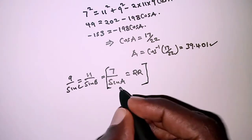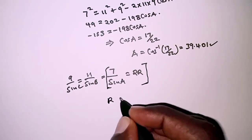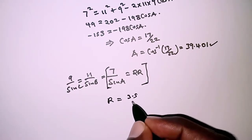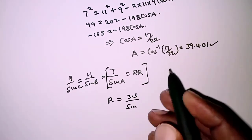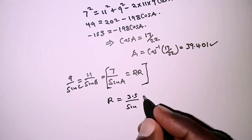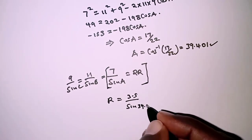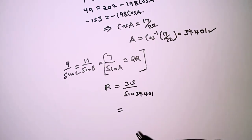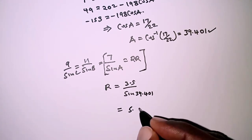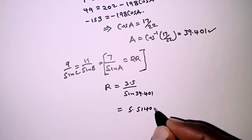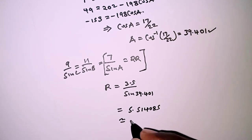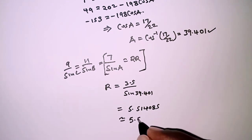Dividing both sides by 2, R equals 3.5 over sine A, where A is 39.401 degrees. Working this out on a calculator gives 5.514085, and rounding to two decimal places the radius R is 5.51 centimeters.